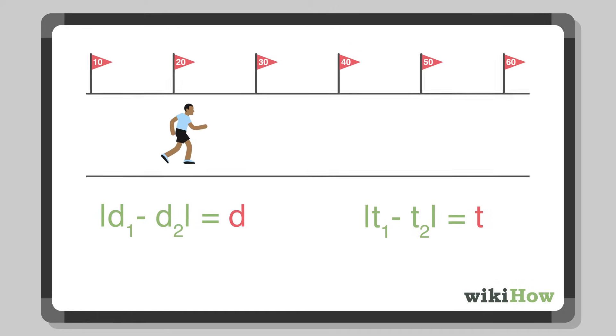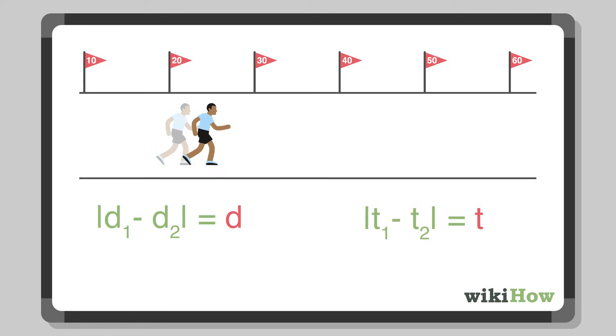For instance, if a runner began sprinting due east at the 22 meter mark along a track and ended up at the 52 meter mark, you'd subtract 22 from 52 to find the distance, or displacement, of 30 meters.